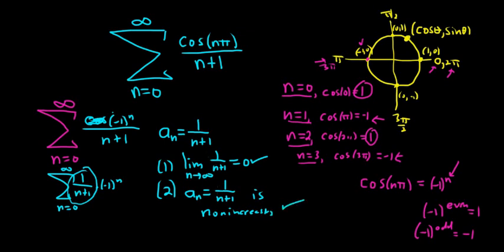So both of these conditions are satisfied and so therefore the series converges by the alternating series test.